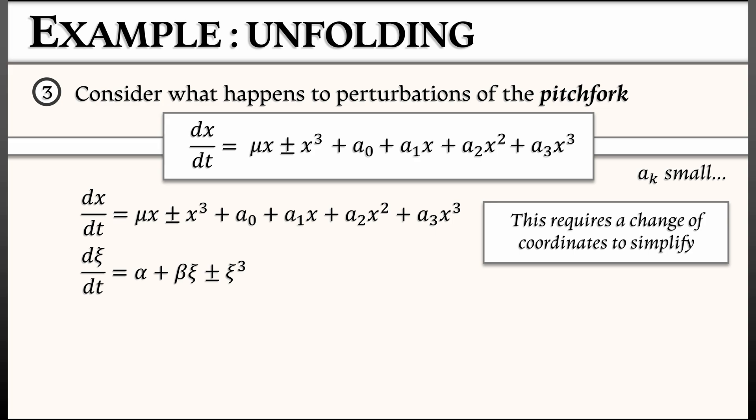we can convert this system into dx/dt equals alpha plus beta xi plus or minus xi cubed. Now, this is a beautiful cubic polynomial, so much inside of this, but what does it mean?